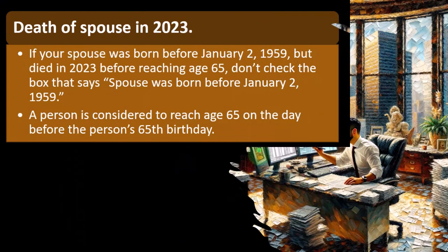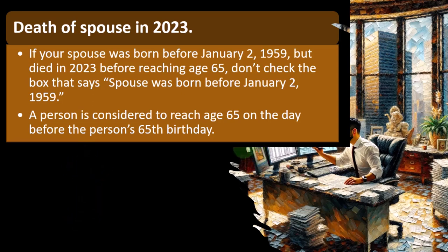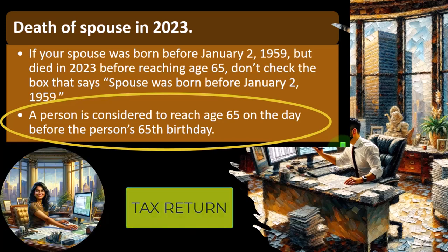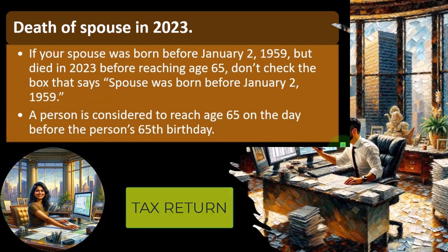Regarding death of a spouse in 2023: if your spouse was born before January 2nd, 1959, but died in 2023 before reaching age 65, don't check the box that says 'spouse was born before January 2nd, 1959.' A person is considered to reach age 65 on the day before their 65th birthday. If you properly input this into the tax return, it should help handle these cutoffs, but you want to understand what the return is doing so you can explain it to a client.